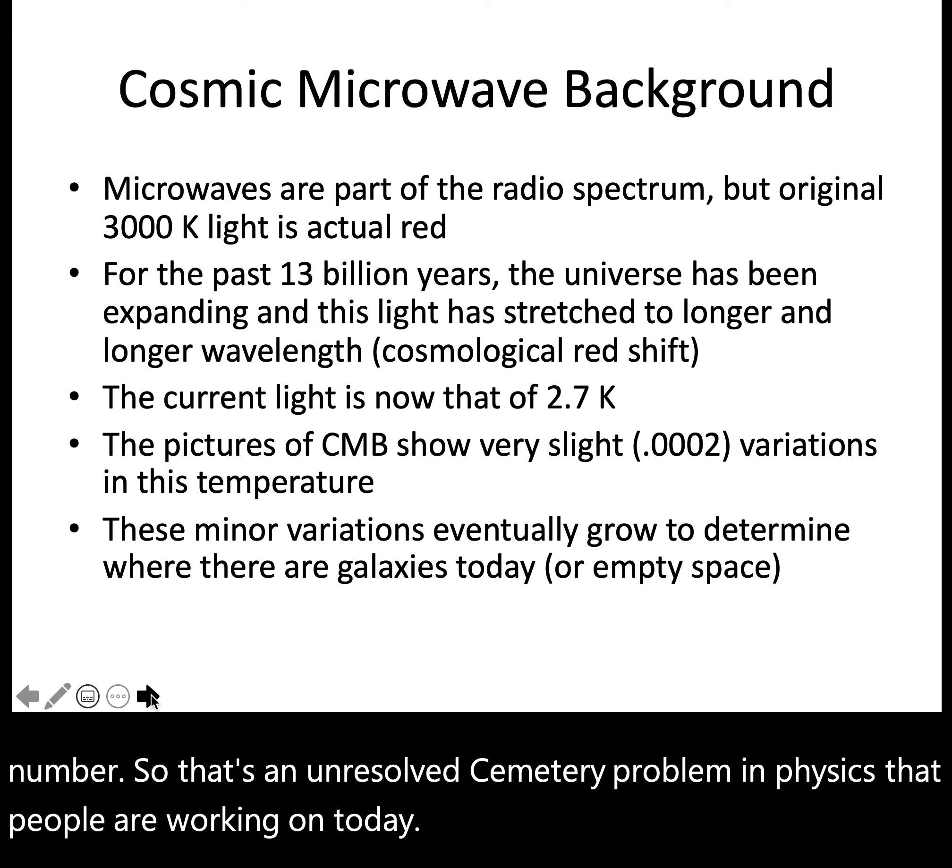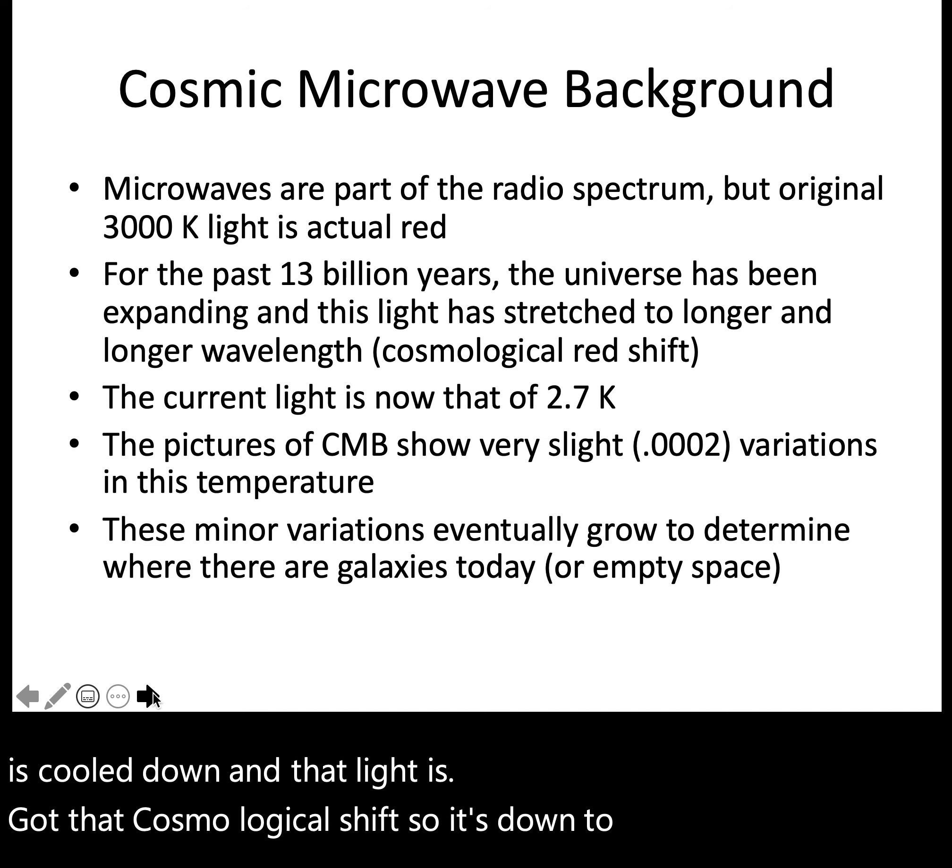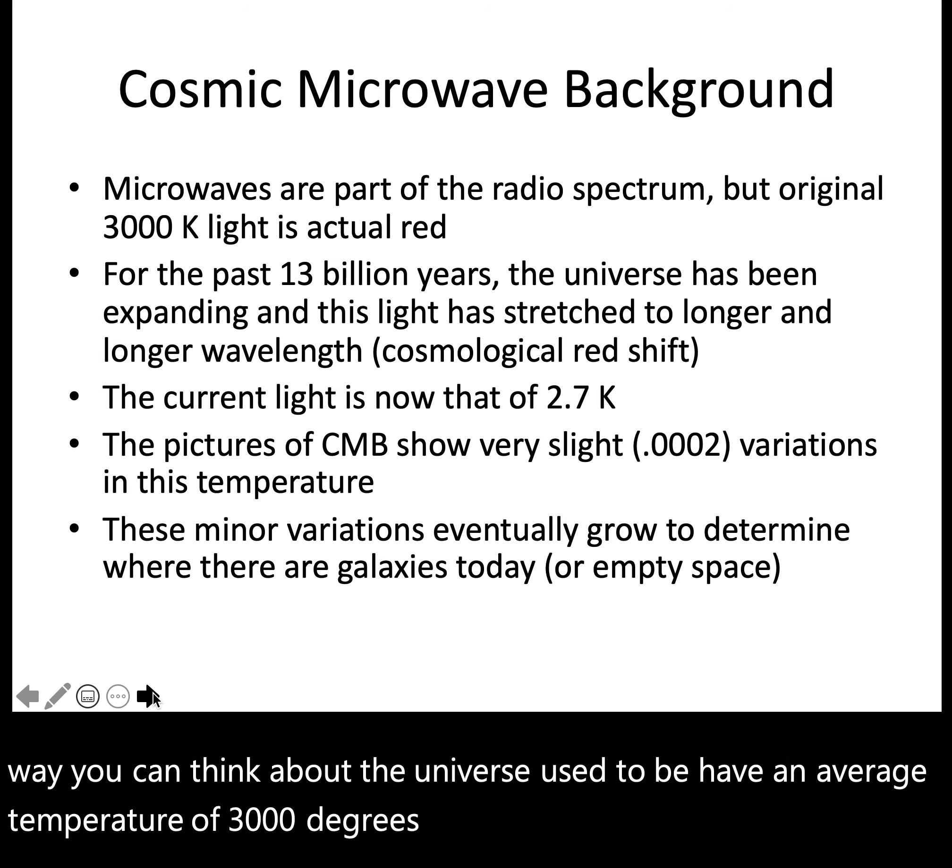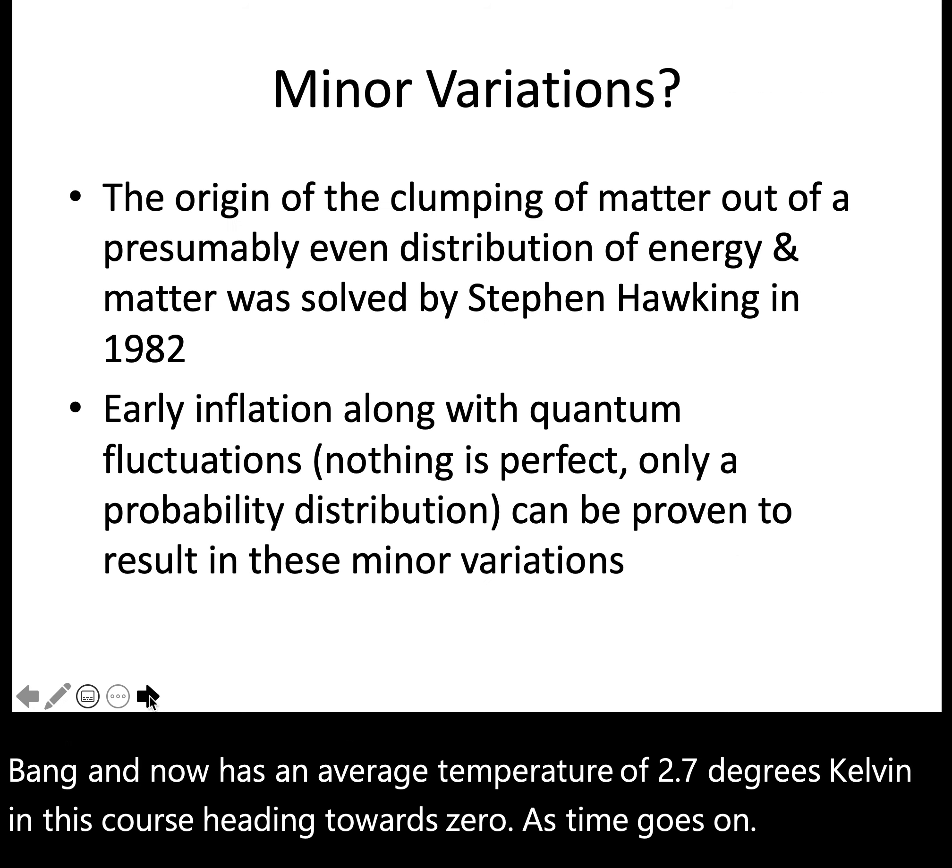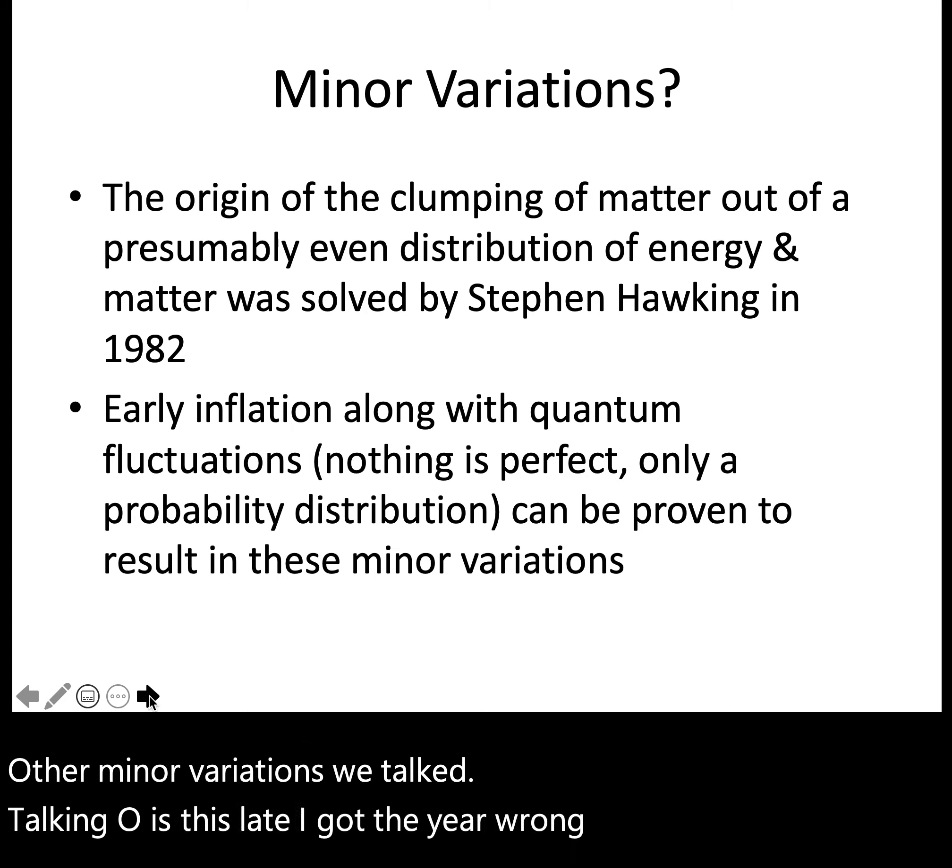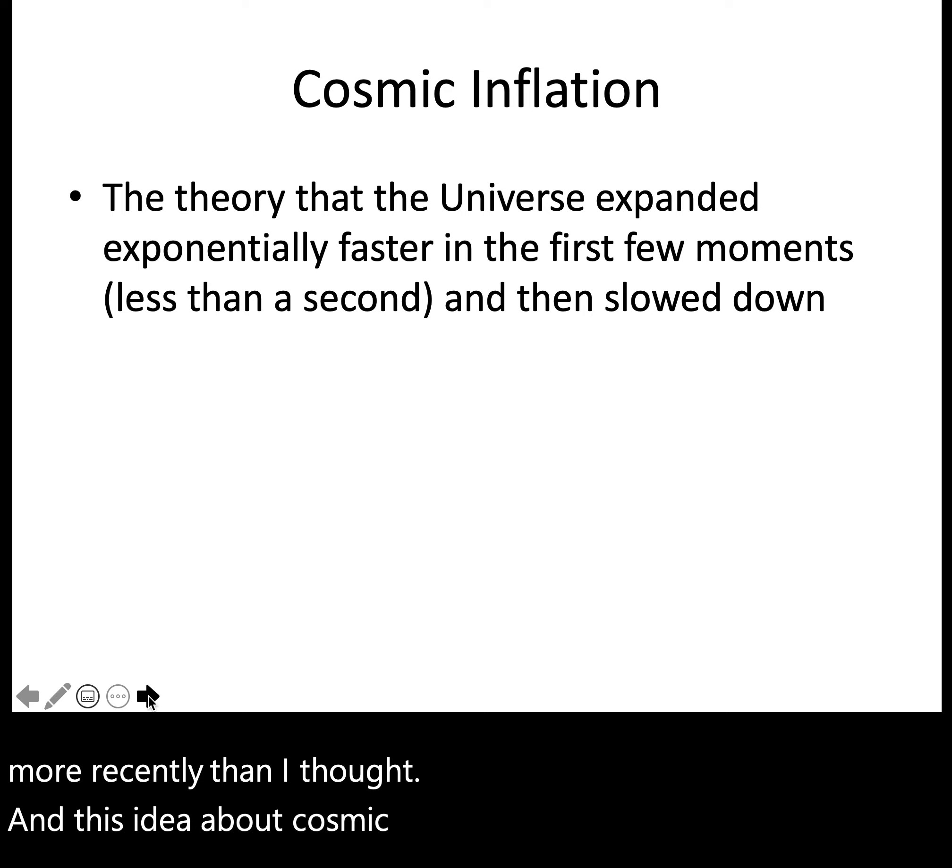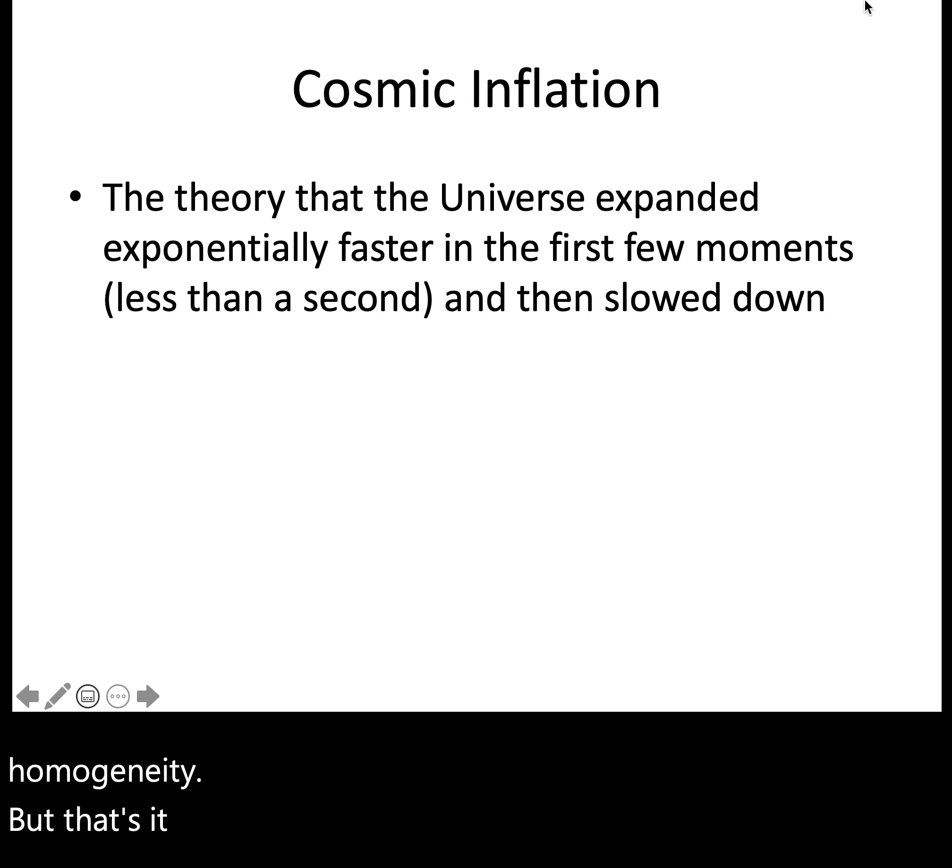Cosmic microwave background, we talked about how the universe has cooled down, and that light has got the cosmological shift, so it's down to 2.7. In a real way, you can think about the universe, it used to have an average temperature of 3,000 degrees Kelvin, 400,000 years after the Big Bang, and now has an average temperature of 2.7 degrees Kelvin, and that's heading towards zero as time goes on. The minor variations, we talked about Hawking. I got the year wrong though. This is 1982, so much more recently than I thought. And this idea about cosmic inflation. So I've got a couple videos for you guys to watch about inflation and the Hawking inhomogeneity, but that's it for this talk. Thanks for listening.